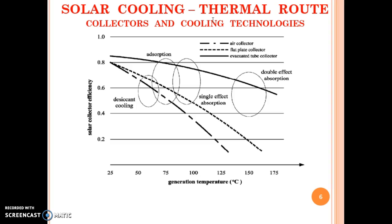Here solar cooling, the thermal route is shown. What are the different types of collectors which can be combined with different cooling technologies? So those domains are shown. The three lines here indicate the generator temperature versus solar collector efficiency. Generator temperature is nothing but the supply temperature from the solar collector. So as the supply temperature from solar collector increases, the losses from solar collector increase, so the efficiency goes down.